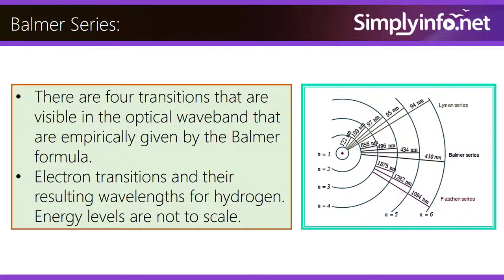There are four transitions that are visible in the optical wave band that are empirically given by the Balmer formula.